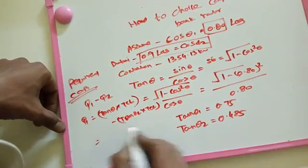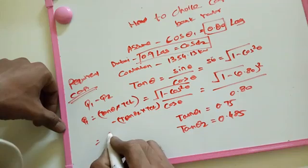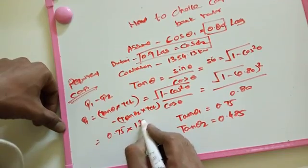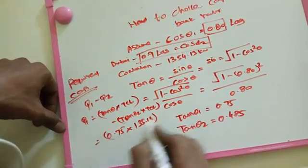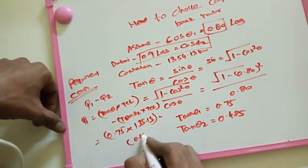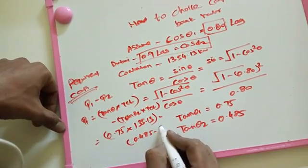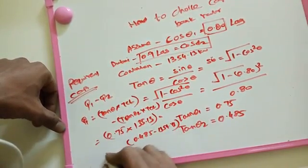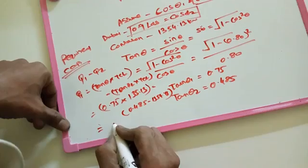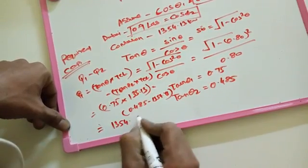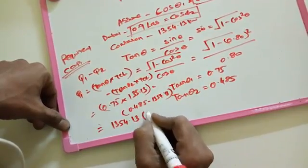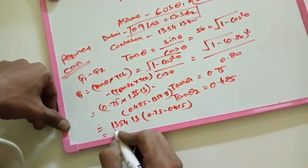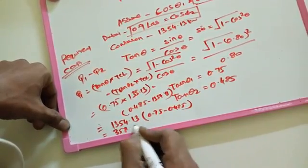Here tan theta 1 times total connected load, tan theta 1 is 0.75 into 1354.13, minus 0.485 for tan theta 2 times 1354.13 for total connected load. We take the total connected load in common: 1354.13 times 0.75 minus 0.485. Here we got 358.05.